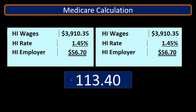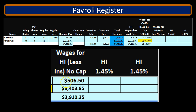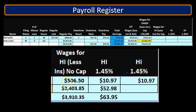We can arrive at those same numbers by calculating on an employee-by-employee basis — Bill and Pam respectively. We'll take Bill's $506.50 times 1.45%, or 0.0145, giving us $10.97. Then Pam's $3,403.85 times 1.45% gives $49.36, which totals out to $60.33 for the employee portion. The same calculation applies for the employer portion: $506.50 times 1.45% gives $10.97, and $3,403.85 times 1.45% gives $49.36, summing to the same total.